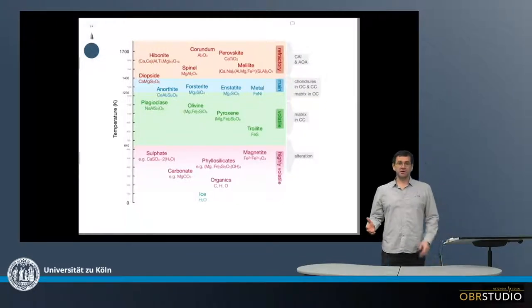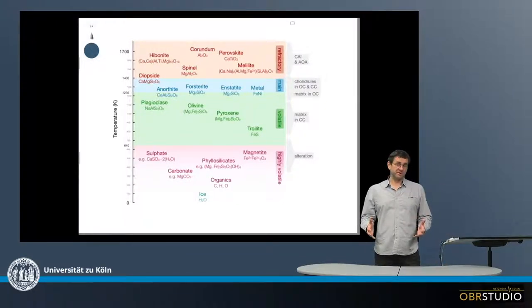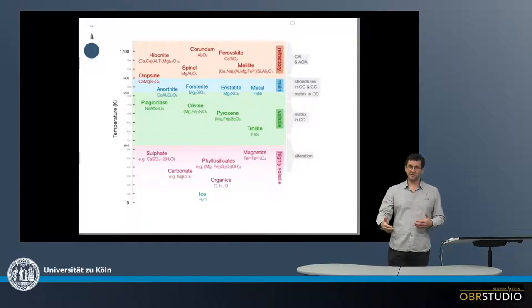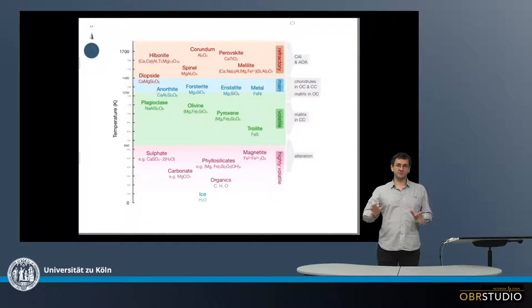In the very early stages of the solar system in the protoplanetary disk, likely before CAI formation and before chondrule formation—really at the very beginning—parts of the disk, smaller or larger (it's not entirely clear), were very hot and all the material was completely evaporated.